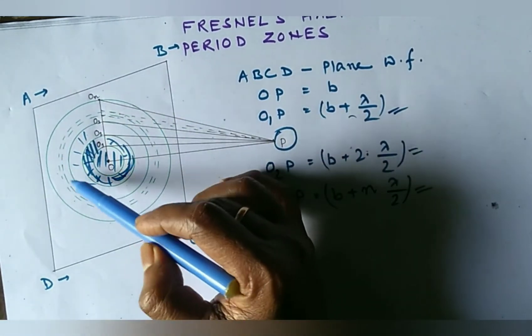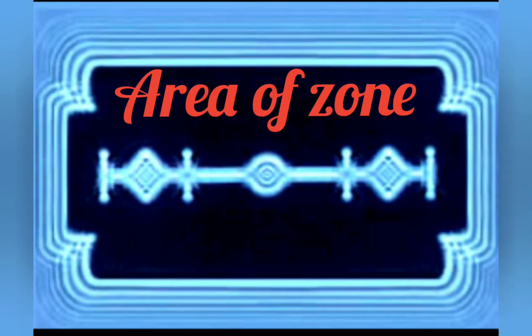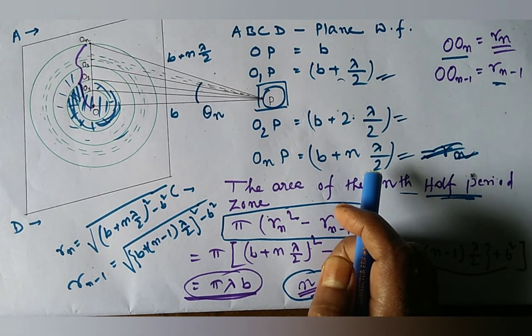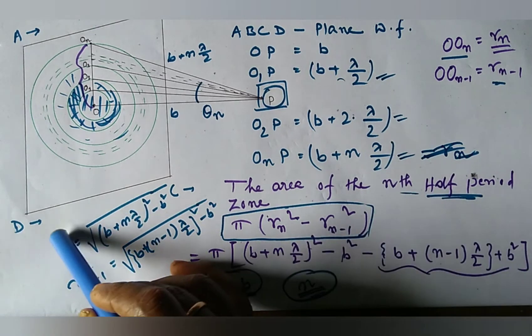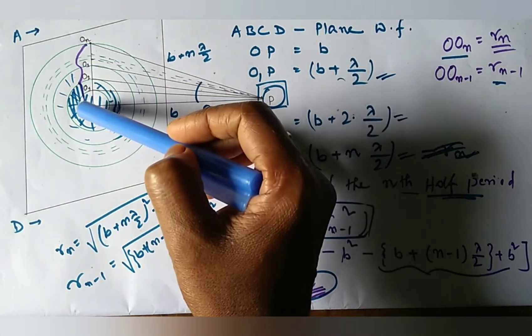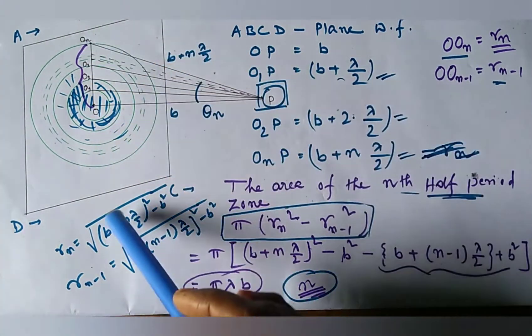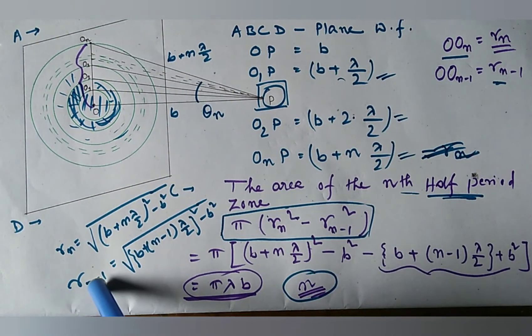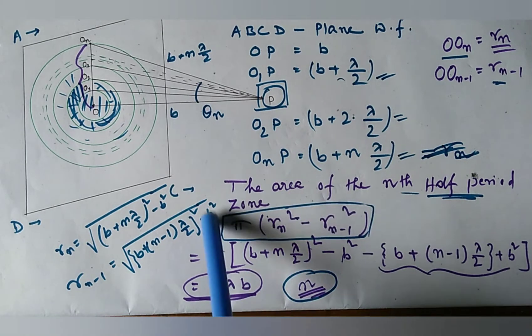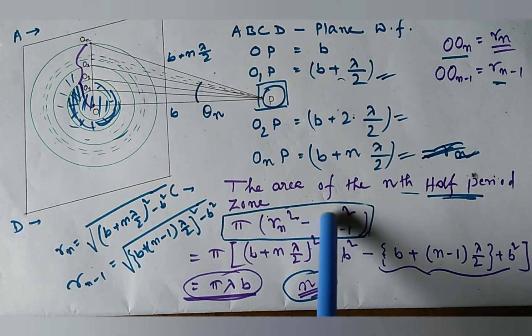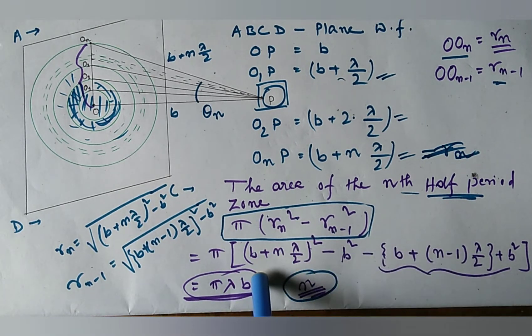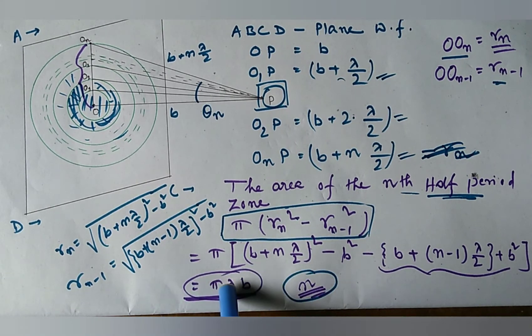Now, we calculate the area of the nth half-period zone. The nth half-period zone is the annular space between the circles of radii Rn and Rn-1. Rn equals O_On, and that is equal to root over this, and Rn-1 is equal to this. Then the area of the nth half-period zone will be of this form: pi Rn squared minus Rn-1 squared. And if we put this value and then calculate,